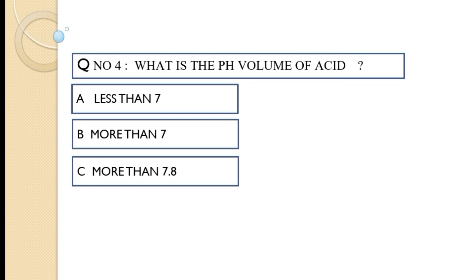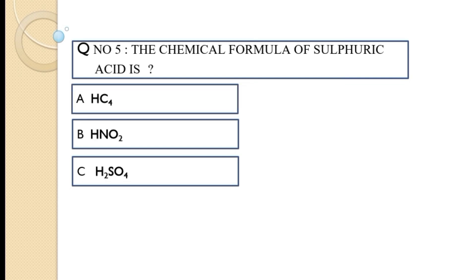Question number four: what is the pH value of an acid? Option A: less than 7, option B: more than 7, option C: more than 7.8. The correct answer is option A, less than 7.